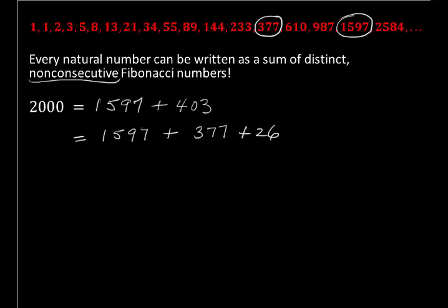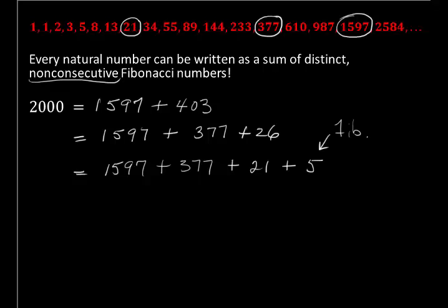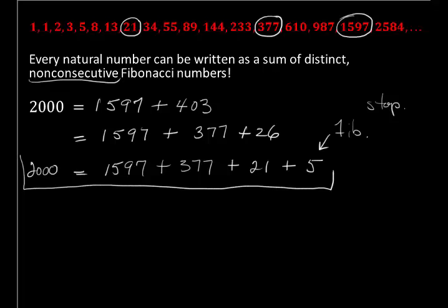Twenty-six is not a Fibonacci, so continue. Rewrite as one thousand five hundred ninety-seven plus three hundred seventy-seven plus twenty-six. The biggest Fibonacci less than twenty-six is twenty-one, so take that out: twenty-six minus twenty-one equals five. Five is a Fibonacci, so we stop — we don't rewrite five as two plus three because two and three are consecutive Fibonacci numbers, violating our condition. Therefore, two thousand equals one thousand five hundred ninety-seven plus three hundred seventy-seven plus twenty-one plus five, a sum of distinct non-consecutive Fibonacci numbers.